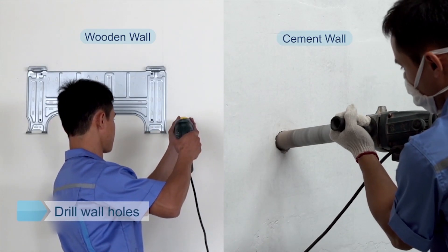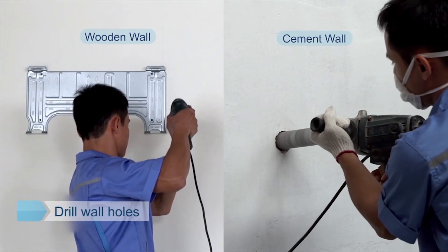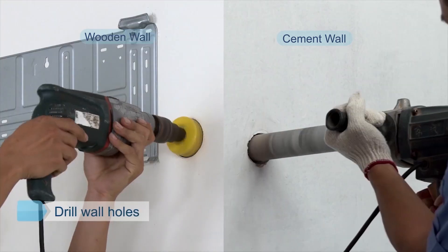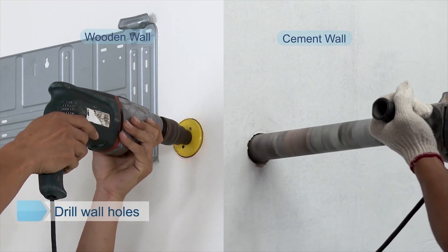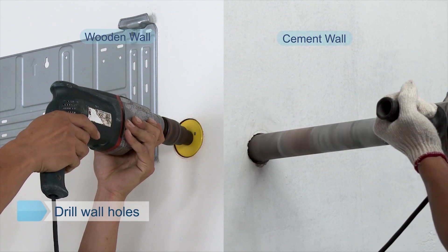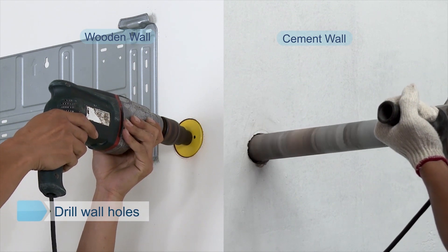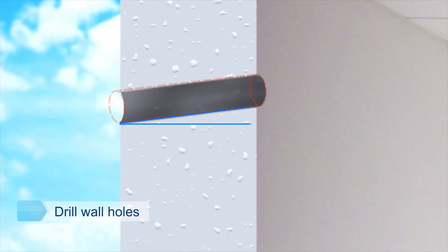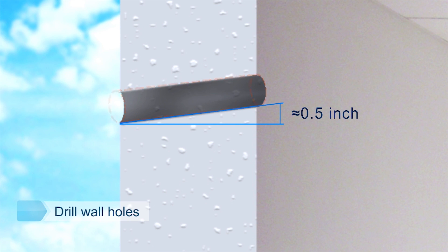Determine the wall hole position according to the exit pipe direction and the expected installation position of the outdoor unit. Avoid wires and other foreign materials. Attention should be paid that the inside of the hole should be about 0.5 inches higher than the outside. Put on the wall socket.